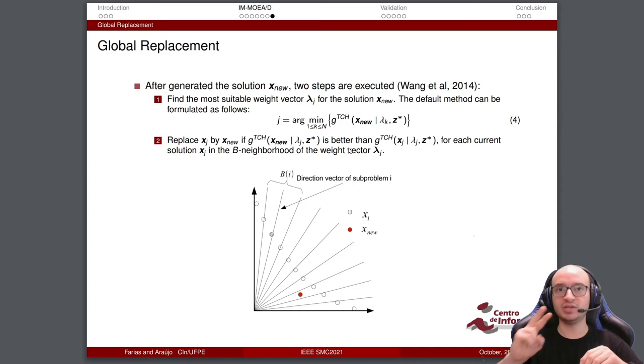The global replacement requires two steps. Notice this figure. Here we have a solution, the x_i the parent, and a new solution, this red point. This solution is very far from a new parent, but it is a good solution for this region. When we have a new solution, we will take the decomposition approach for each weight vector, and the best value is the appropriate weight vector for this solution. The solution will replace it, if it is better than in the neighborhood of this weight vector. And we make this for each solution in the new population. This is the global replacement. This is the approach.